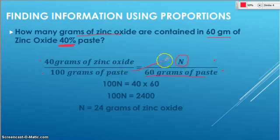Then you're ready to do your cross multiplication. So 100 times N is 100N. 40 times 60 is going to go on the other side of that teeter-totter. 100N is going to equal 2,400. And then remember, we divide both sides by whatever is with that letter. So in this case, we're dividing both sides by 100. So when we take that 2,400 and we divide it by 100, we get 24 grams of zinc oxide.